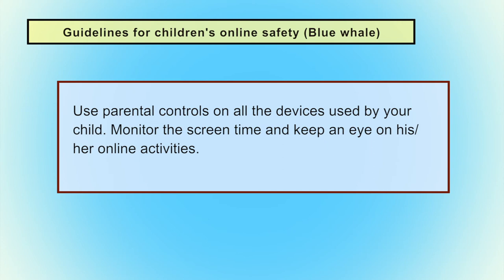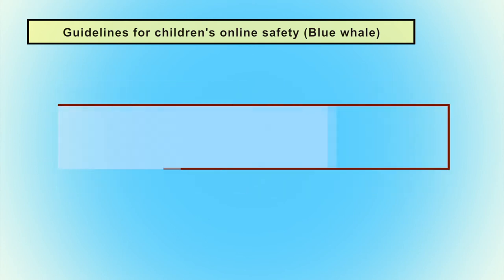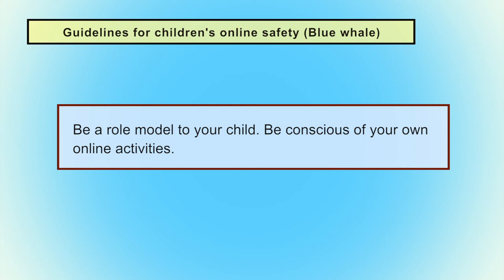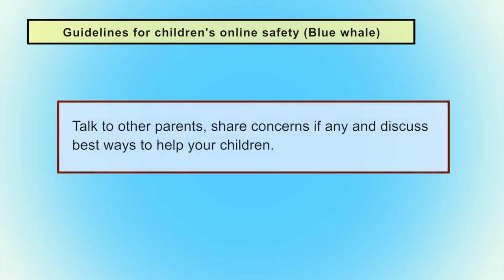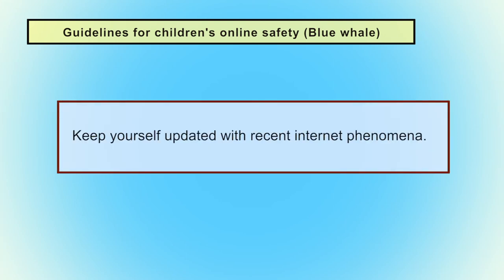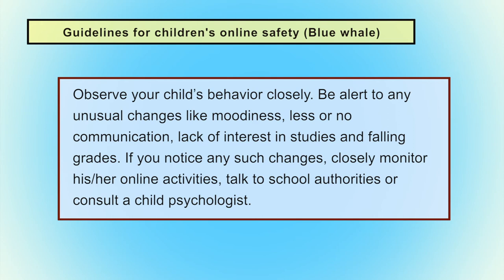Talk to your child more often, explore the online world together, and engage in interesting activities demonstrating ethical and safe online behavior. Use parental controls on all devices used by your child and monitor screen time. Keep an eye on their online activities. Be a role model and be cautious of your own online activities. Talk to other parents, share concerns, and discuss the best ways to help your children if you observe any abnormal behavior. Keep yourself updated with recent internet phenomena. Observe your child's behavior closely and be alert to unusual changes like moodiness, reduced communication, lack of interest in studies, or falling grades. If you notice such changes, closely monitor online activities, talk to school authorities, or consult a child psychologist.